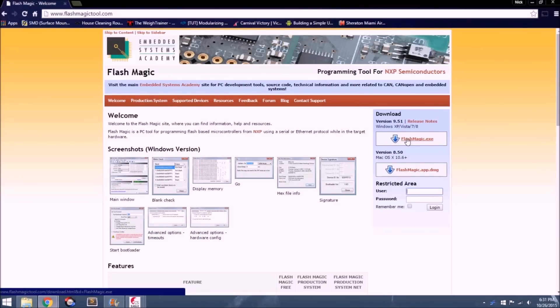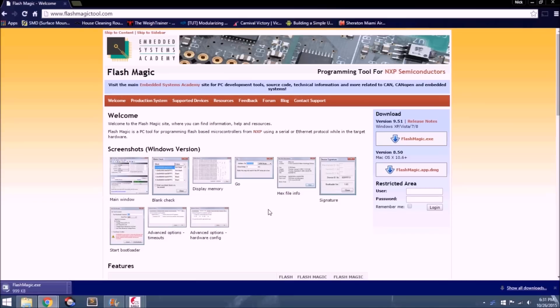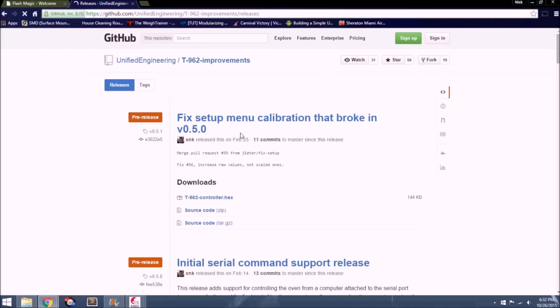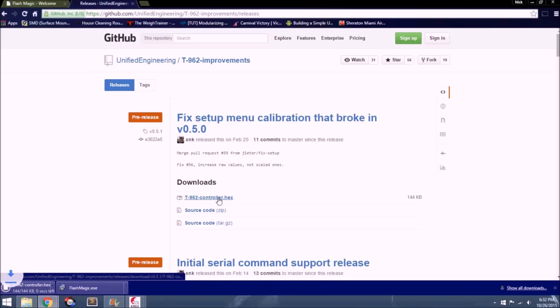So next, download the FlashMagic tool. The link to this is in the description. Here I am using Windows 8, so I will select the appropriate option. While you're online, go to the Unified Engineering's pre-built firmware page and also download the latest hex file. In my case, it was version 0.5.0. Then go through the installation wizard from the FlashMagic executable. It is a very simple setup. Here I also installed the USB drivers along with the tool.